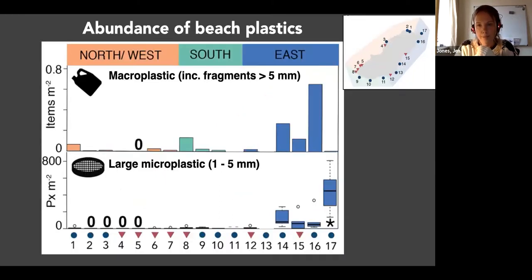Here you can see the results for the beach plastics. So this is macroplastic, which are whole items and then fragments larger than five millimeters in the top graph. And then the bottom graph is sieved large microplastics that we collected in quadrats at the strand line of the beach down to five centimeters depth. What you can see here is that the sites are laid out in numerical order. You can see in this tiny map here where they correspond to around the coast. We've color coded that. So these orange ones are the north and west sites here, green around the south, and then blue are the easterly sites where you can see we get a lot more plastic accumulating.